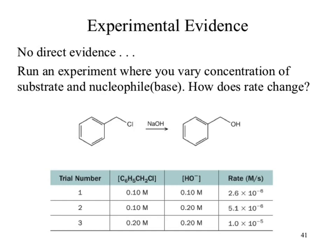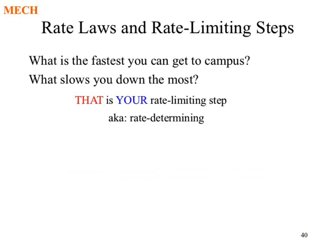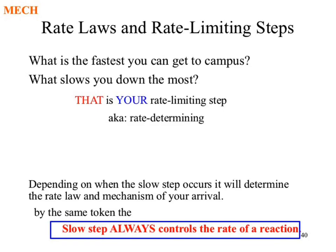What we're concerned about are the simplest mechanistic steps — those dictate our rate law. Once we have the rate law, we can classify our reaction. When we look at rate laws, we already tried thinking about this using examples like brushing your teeth or getting to class.